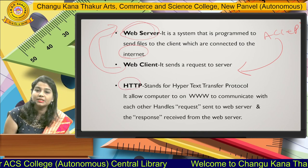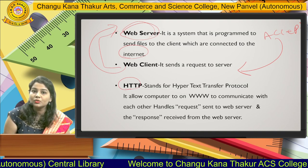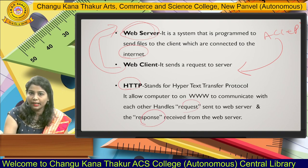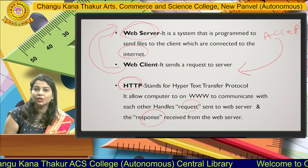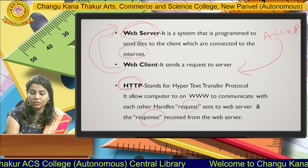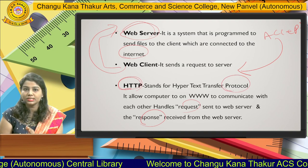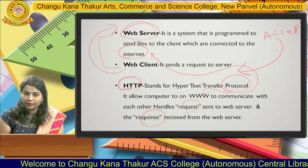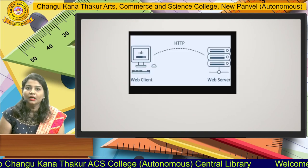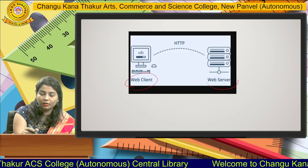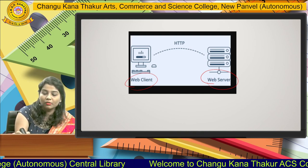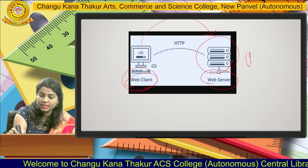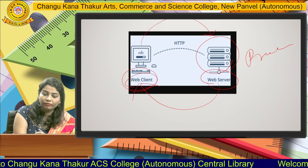Next is HTTP. HTTP stands for Hypertext Transfer Protocol. It allows computers on the WWW to communicate with each other and handle requests and responses — requests from the client and responses from the server. HTTP is also a protocol, a set of rules. It connects to the WWW and to the internet. The diagram represents a web server and a web client — the web client requests a page from the web server, and the web server processes and returns that page.